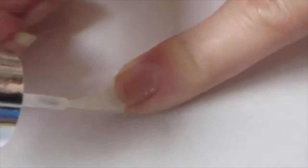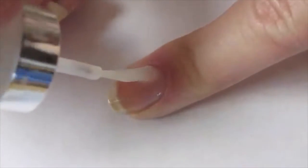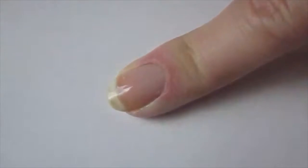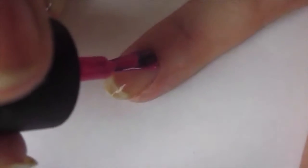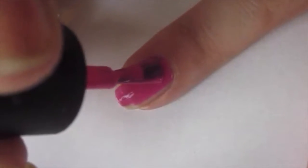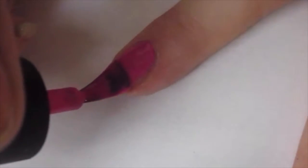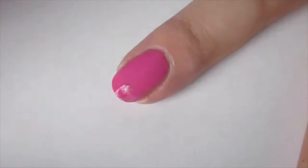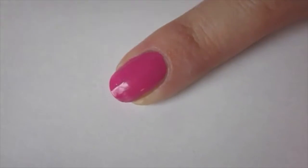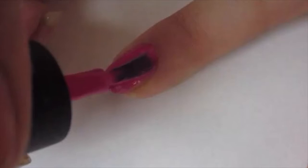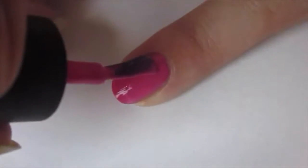So to start off, I'm applying a base coat to protect my natural nail. Next, I applied a pink polish to all of my nails. If the first coat was not opaque enough, don't be afraid to apply a healthy second coat.